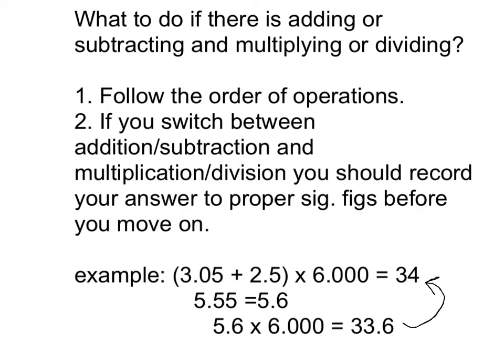So now we have our 5.6, and we're going to finish our mathematical problem and multiply it by 6.000. Now we're on multiplying and dividing, and in this case you count the number of sig figs. Notice here there are 2 sig figs, but in this number there are 4 sig figs. Therefore our answer can only be written to 2 sig figs. So we're going to round 33.6 to 2 sig figs. That comes out to be 34.